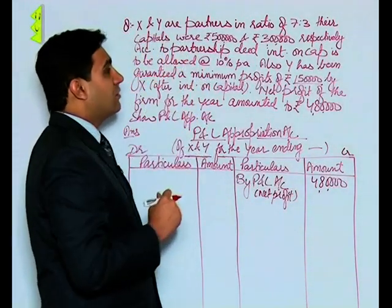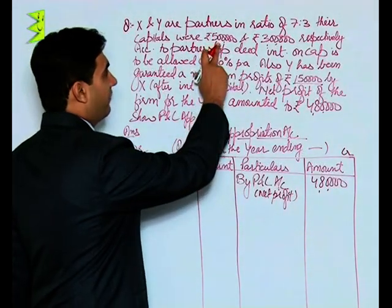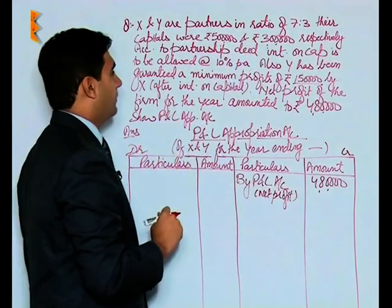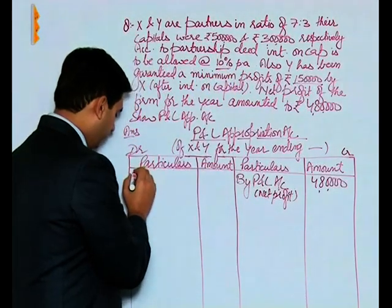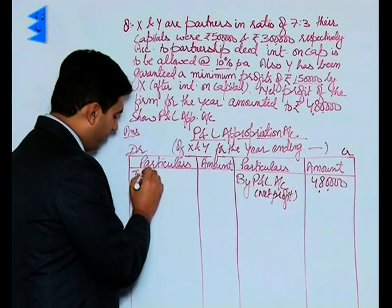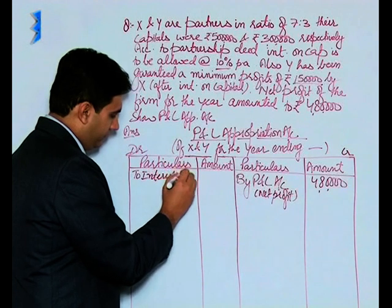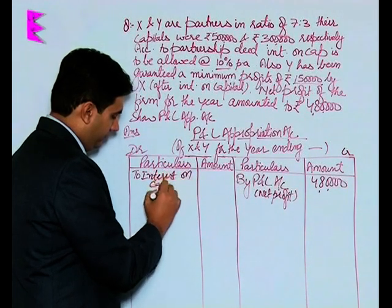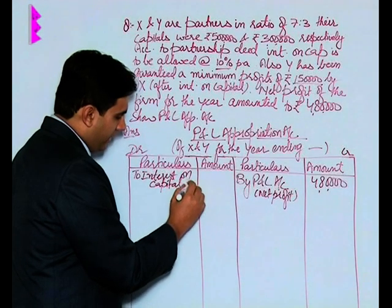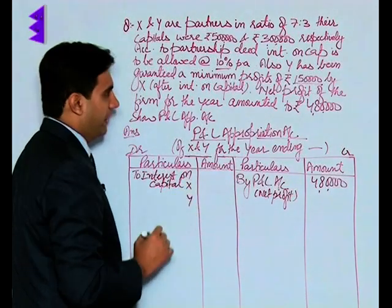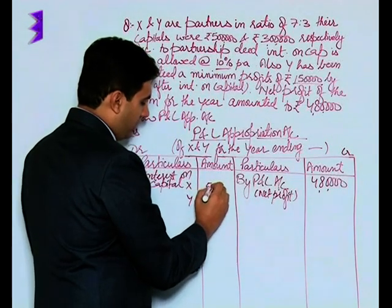Now interest on capital would be provided. Capitals are 5 lakh and 3 lakh for X and Y respectively, and interest is to be allowed at 10% per annum. So we will have two interest on capital entries, one for X and one for Y.